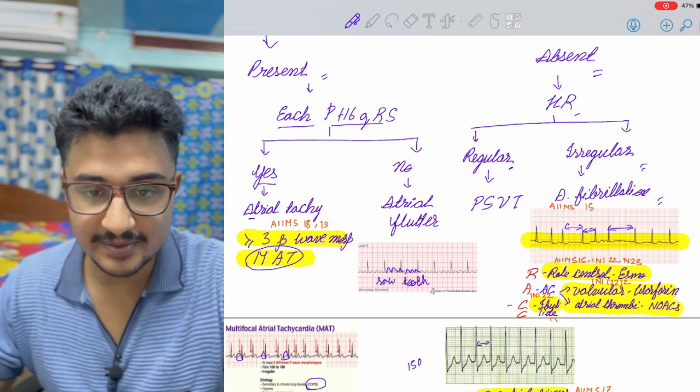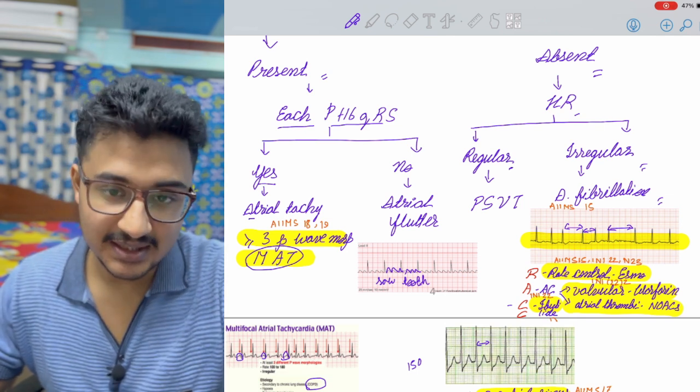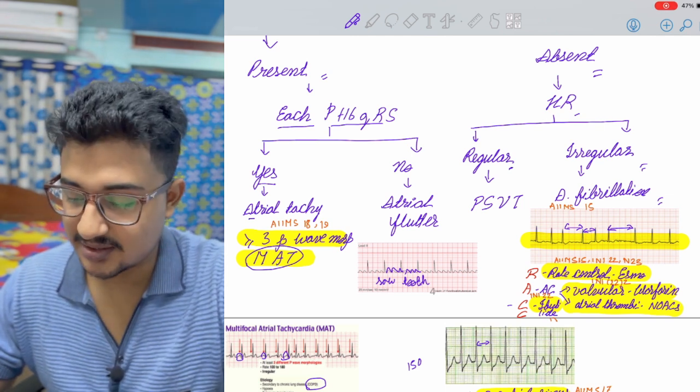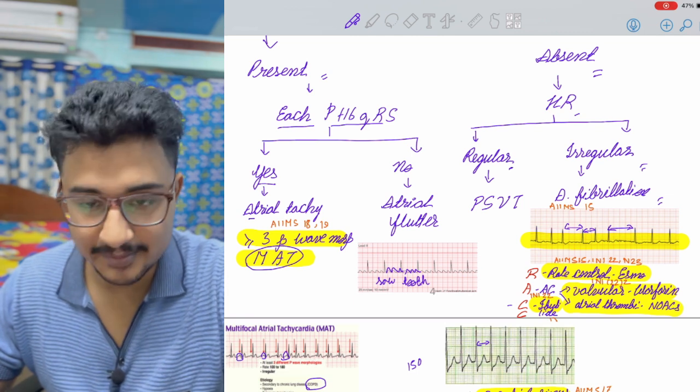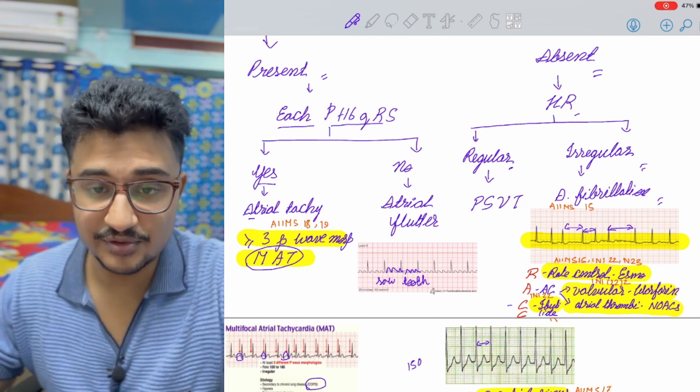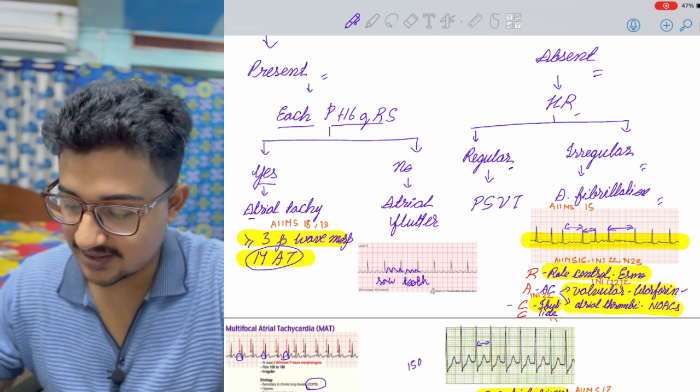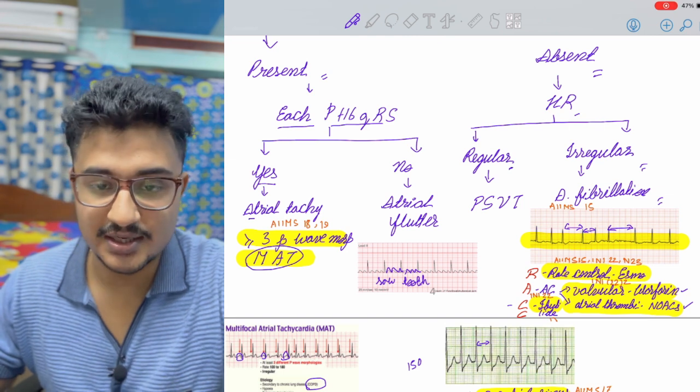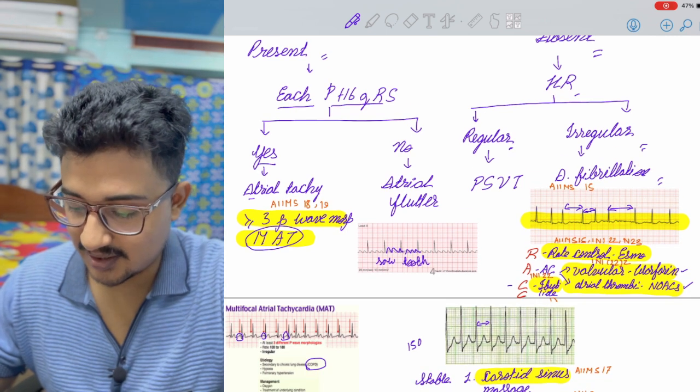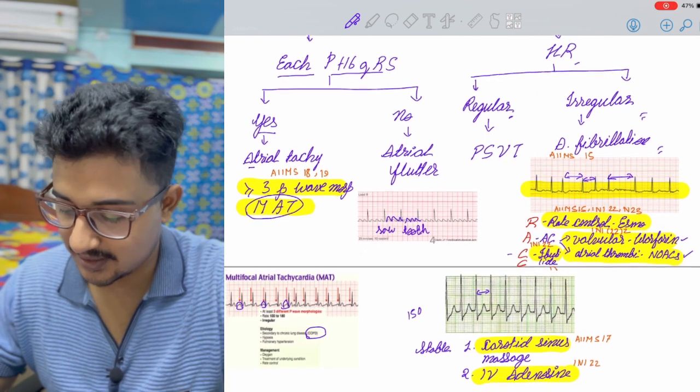In treatment of atrial fibrillation, we follow the RIS protocol: rate control, anticoagulation, chemical cardioversion and electrical cardioversion if required. In rate control, Esmolol and Verapamil are given in treatment. In anticoagulation, if there is valvular pathology like mitral stenosis, then drug of choice is warfarin. But if there is atrial thrombi, then novel oral anticoagulants are good like dabigatran, rivaroxaban. In chemical cardioversion, ibutilide and amiodarone are given, that was also asked in question.